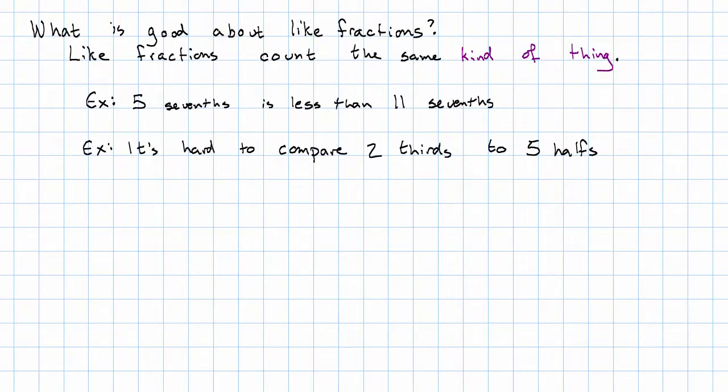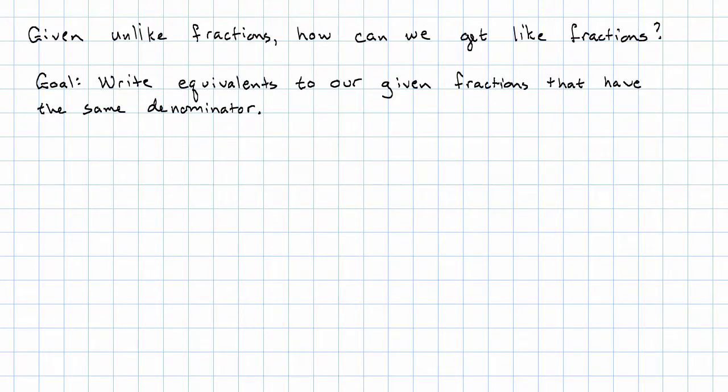So that raises the question, how can we get like fractions? In order to get like fractions, we need to write equivalents to our given fractions that have the same denominator. So continuing with the earlier example, we had the fractions 2 thirds and 5 halves. And our goal is to get equivalents to each of these where these denominators are the same.